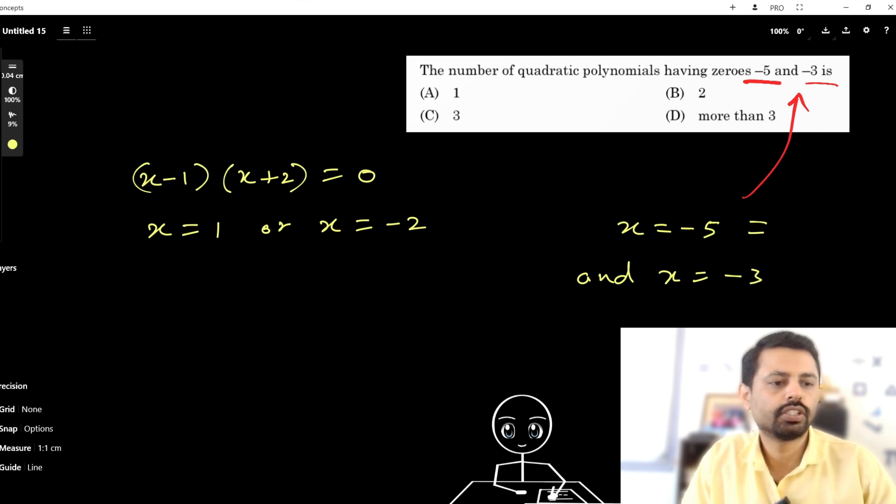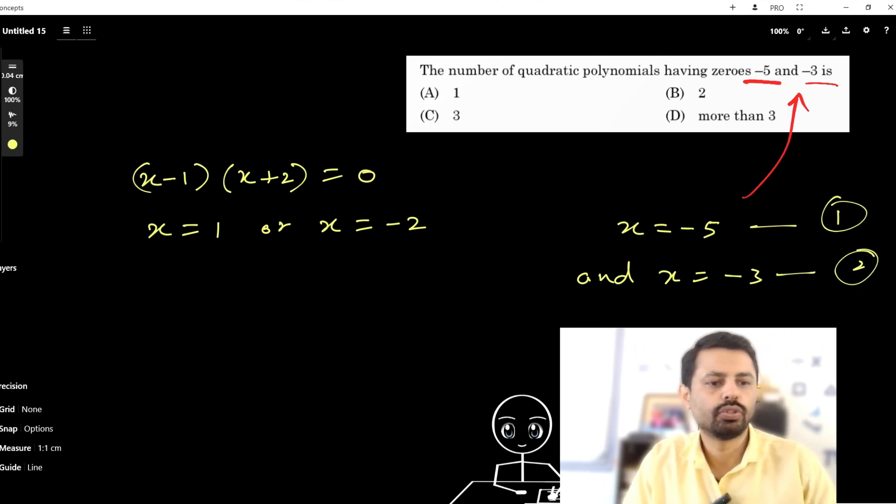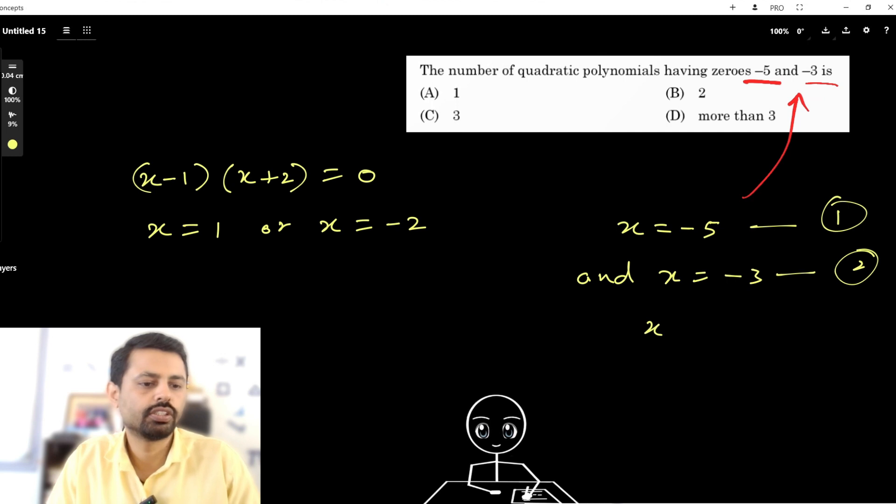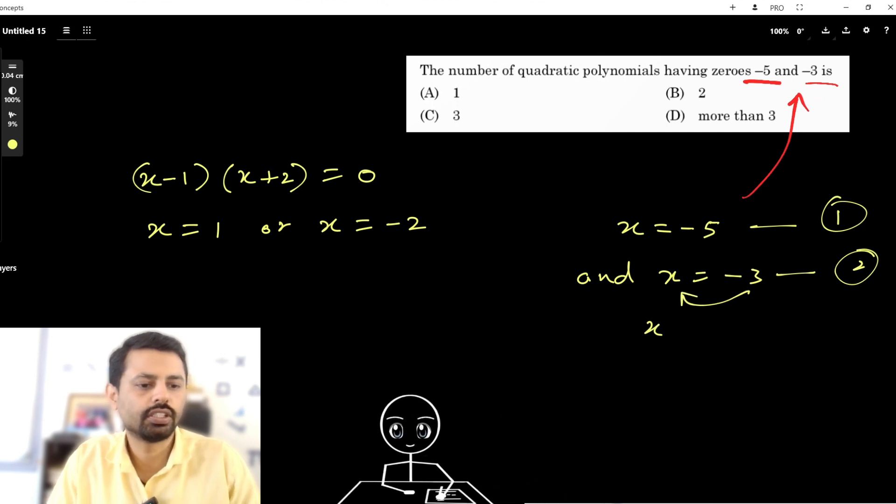So from this, let's call it equation 1 and let's call it equation 2. From 1 and 2, you can get... let's bring this -3 to this side: x+3 equals 0. Let's have it as a bracket.